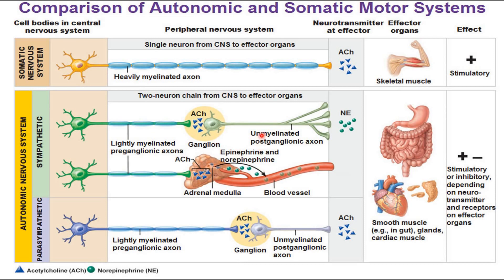Previously we studied the differences on a theoretical basis; now this is a practical depiction from a referenced source comparing somatic and autonomic motor systems. In the somatic nervous system: heavily myelinated axon, acetylcholine, skeletal muscle, and stimulatory effect. In the autonomic nervous system: sympathetic and parasympathetic divisions, lightly myelinated fibers, ganglion, acetylcholine at pre-ganglionic synapses, epinephrine and norepinephrine at sympathetic post-ganglionic synapses, and acetylcholine at parasympathetic post-ganglionic synapses. Effect on smooth muscle is stimulatory or inhibitory depending on neurotransmitter, receptors, and effector organ.